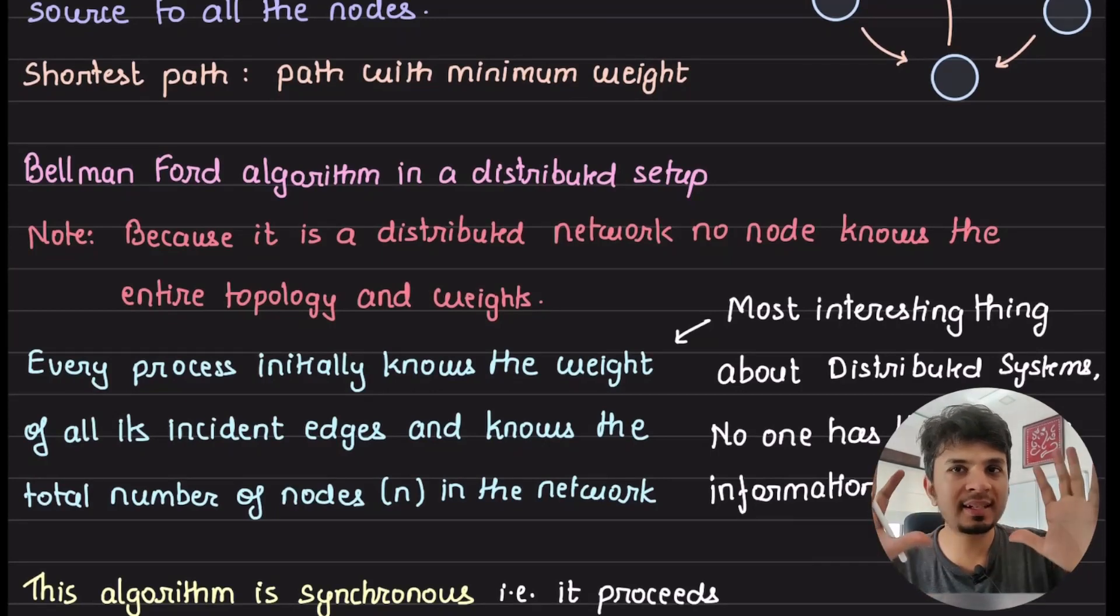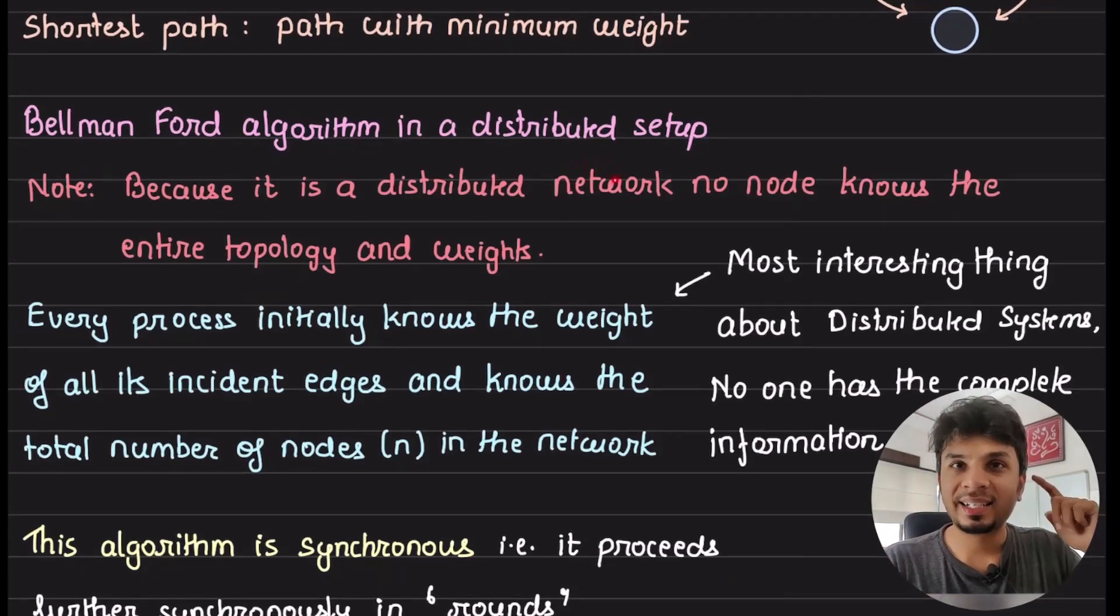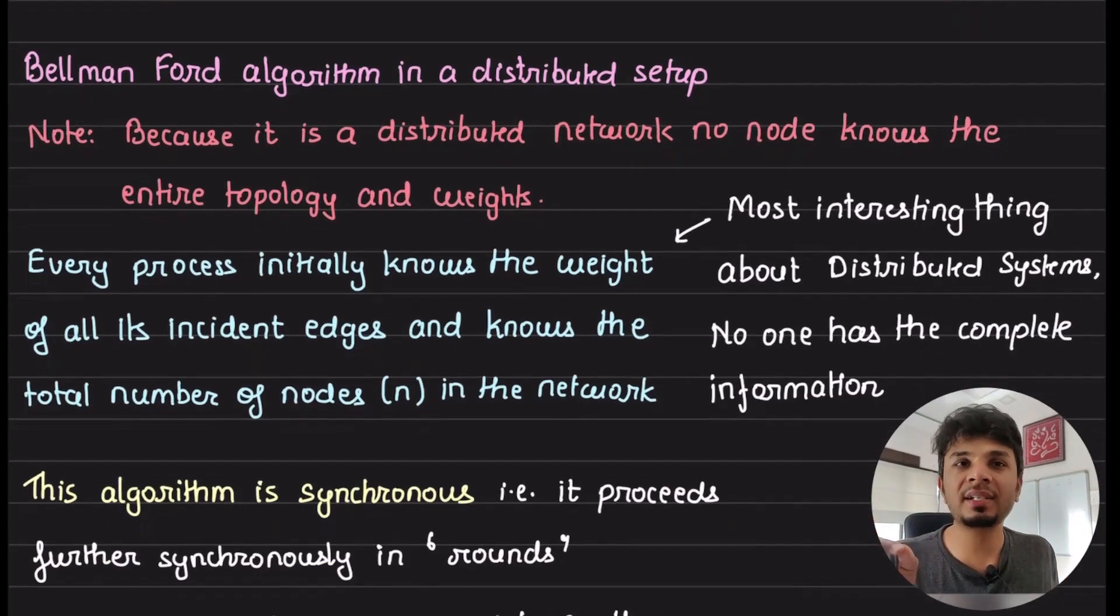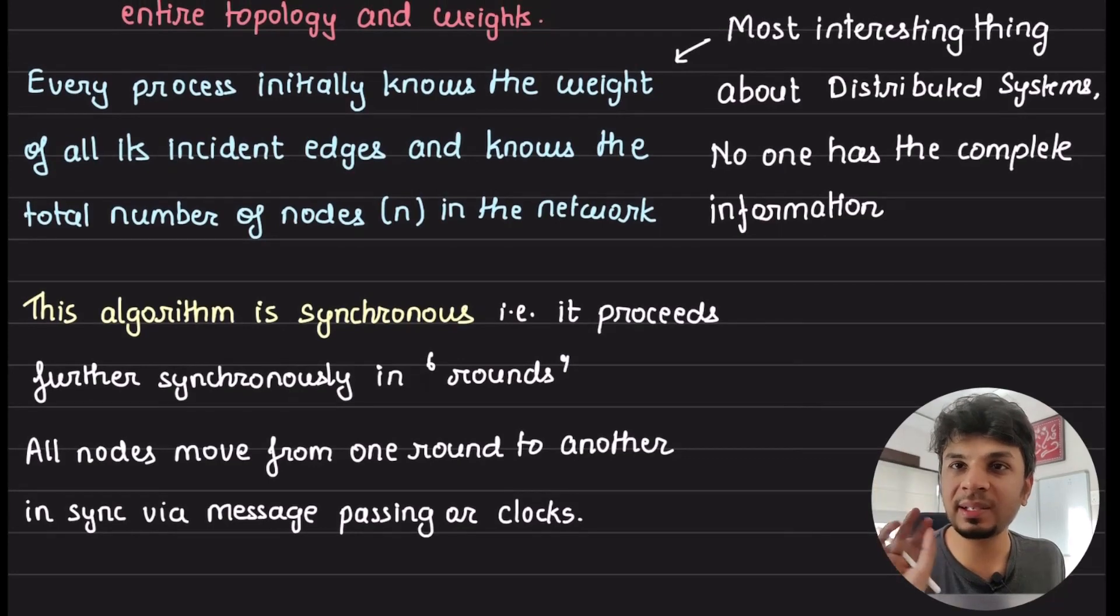Now let's look at how Bellman-Ford algorithm beautifully sits in a distributed setup. Here, just as a disclaimer, it's a distributed network, so no node knows the entire topology or weight. Everyone just knows the weights of the incident edges to it and the total number of nodes in the network. That's all. If a network has 10 nodes, every node would know that the network has 10 nodes, and every node would know the edges that are coming to it or going out of it. That's it. Now we have to devise a shortest path algorithm, and to be honest, this is the beauty of the system where you have very limited information but you still need to achieve something.